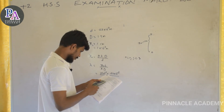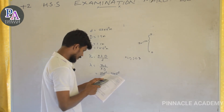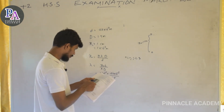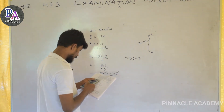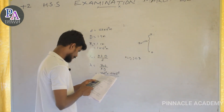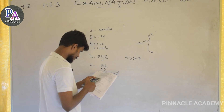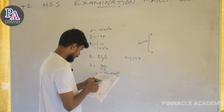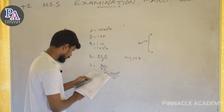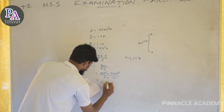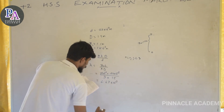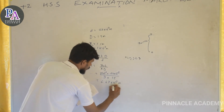Calculating: 1 into 10 raised to minus 2 multiplied by 0.03 into 10 raised to minus 2, whole divided by 3 into 1.5. The answer comes to 6.66 into 10 raised to minus 7 meters. This is the wavelength.